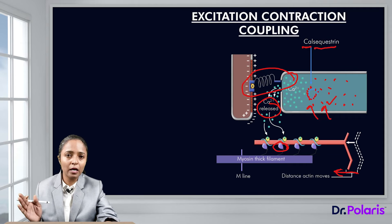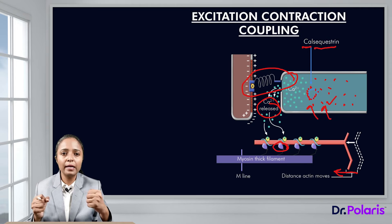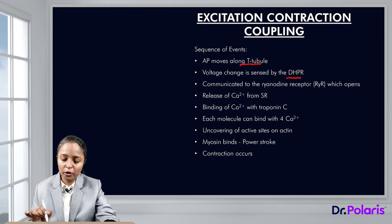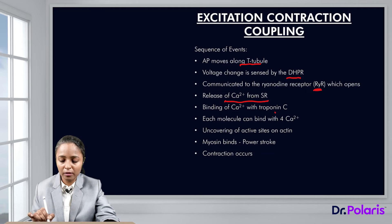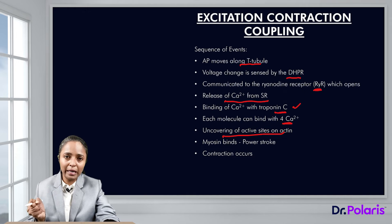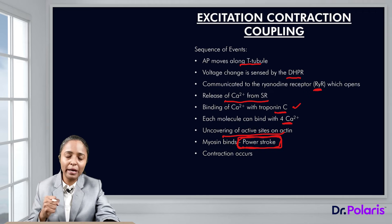The Z-lines move closer because of the pulling effect caused by the myosin heads. In summary, the steps of excitation-contraction coupling are: action potential moves along the T-tubules; voltage change is sensed by the dihydropyridine receptors; this is communicated to the ryanodine receptor, which opens causing calcium release from the sarcoplasmic reticulum; released calcium binds the C subunit of troponin — each troponin molecule can bind four calcium ions; tropomyosin moves away, uncovering actin active sites; myosin head binds and causes a power stroke, moving the actin filament approximately 10 nanometers per stroke.